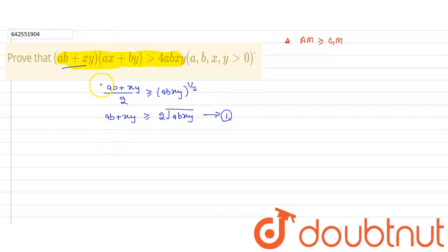Right? Now, my second equation will be this. Right? So, I will write (ax + by)/2 greater than equal to (axby)^(1/2). This becomes ax + by greater than equal to 2√(axby). This is our second equation.